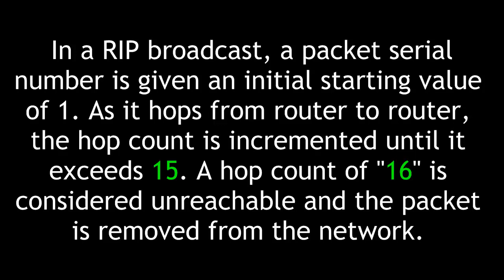In a RIP broadcast, a packet serial number is given an initial starting value of 1. As it hops from router to router, the hop count is incremented until it exceeds 15. A hop count of 16 is considered unreachable, and the packet is then removed from the network.